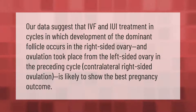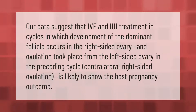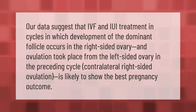Our data suggest that IVF and IUI treatment cycles in which development of the dominant follicle occurs in the right-sided ovary, and ovulation took place from the left-sided ovary in the preceding cycle, contralateral right-sided ovulation is likely to show the best pregnancy outcome.